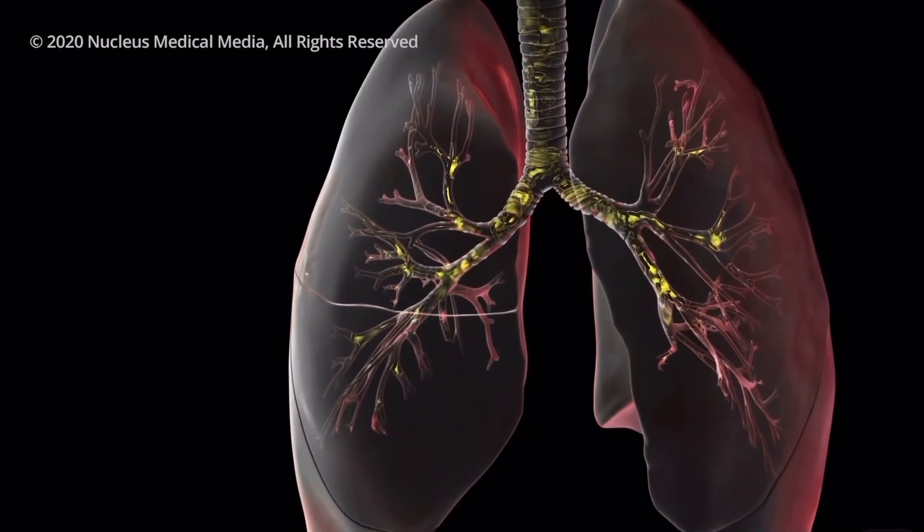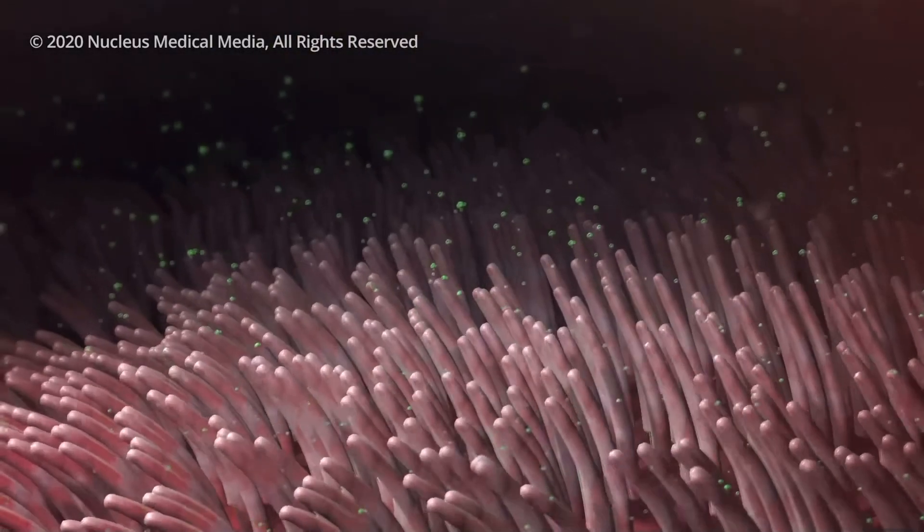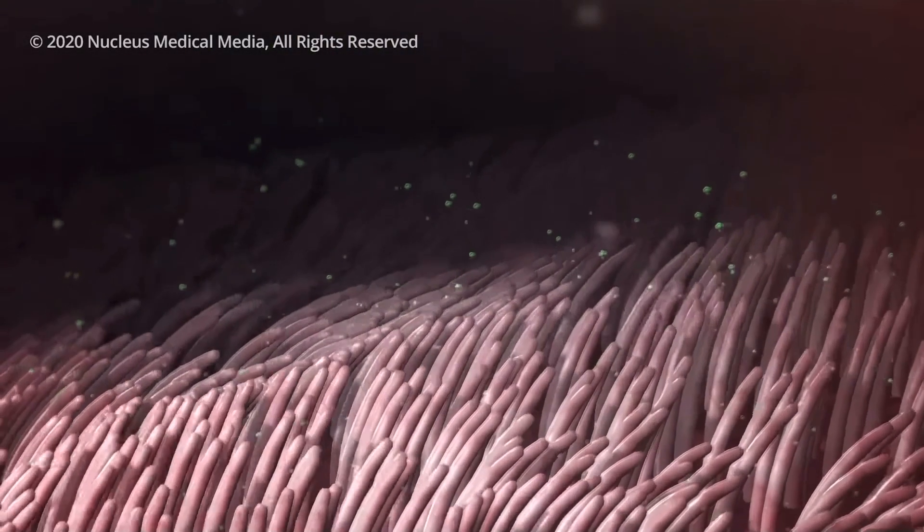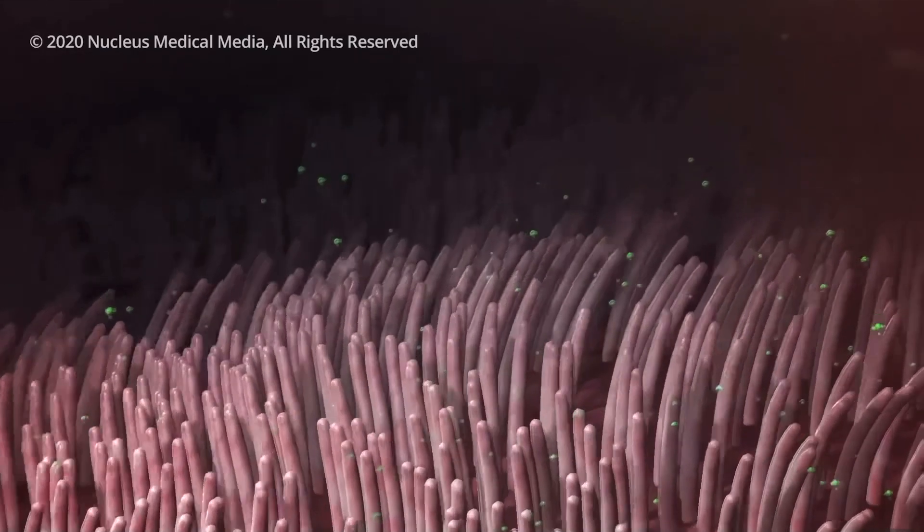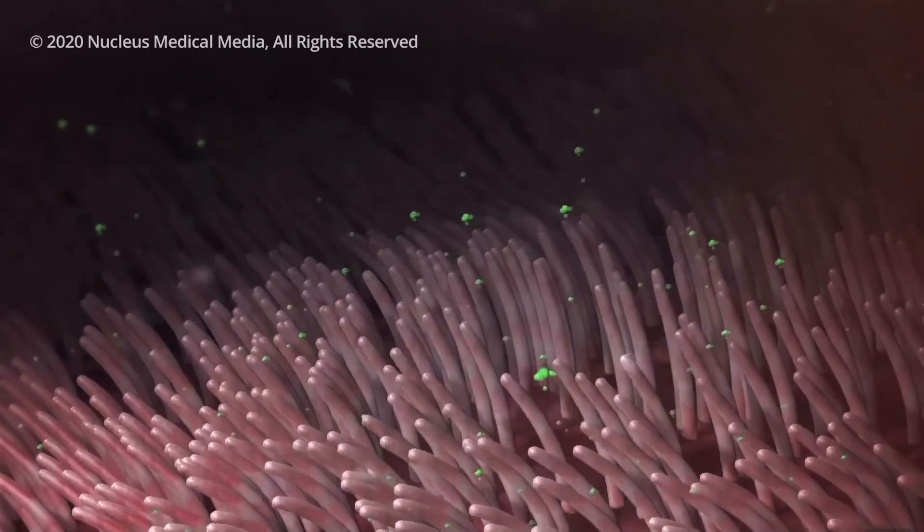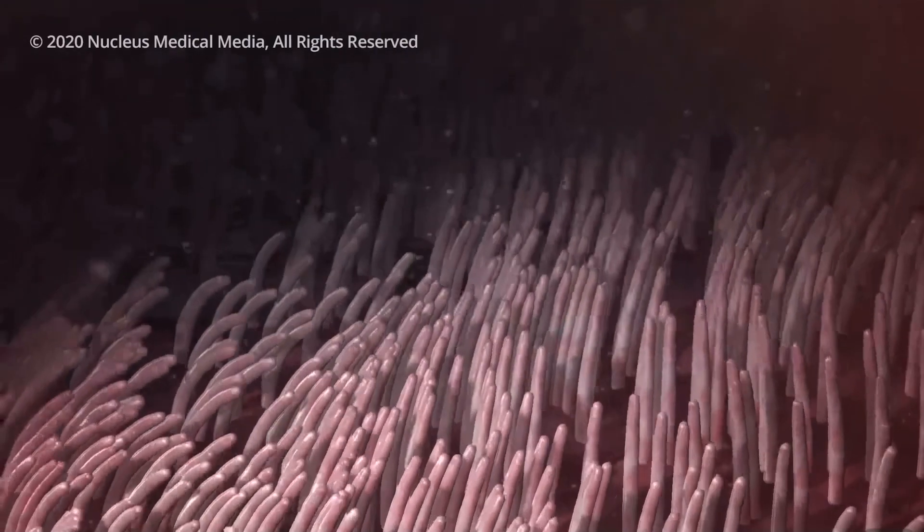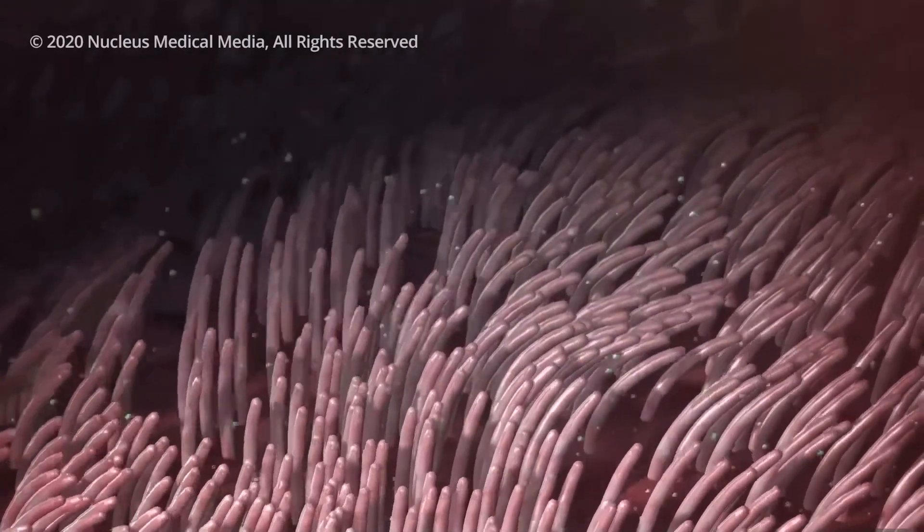A collection of tiny air sacs called alveoli is found at the end of each bronchiole. Each alveolus has a network of capillaries which are microscopic blood vessels. The alveoli and the bronchioles' exceptionally thin walls provide an extremely thin barrier and a large surface area for gas exchange.